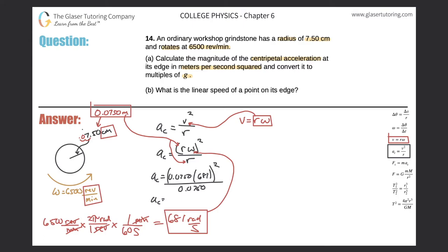So 0.075 times 681, square that whole result, and then divide that by 0.075. So we get a value of 3.48 times 10 raised to the 4th. And this is in meters per second squared. Great. So now that takes care of that part of the problem.